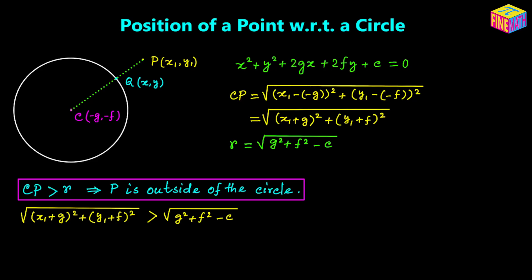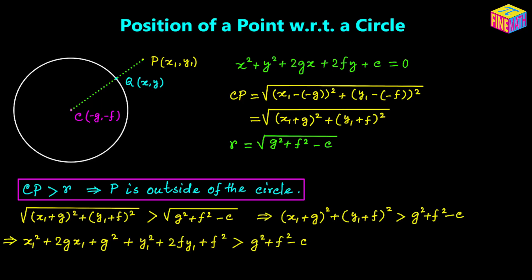Let's simplify this. If we square both sides, we get: (x₁ + g)² + (y₁ + f)² > g² + f² − c. Expanding the squared terms: x₁² + 2gx₁ + g² + y₁² + 2fy₁ + f² > g² + f² − c.